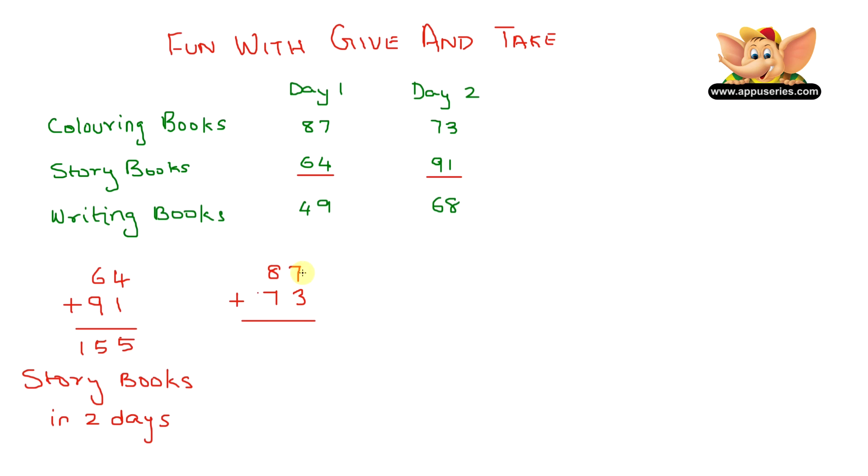That's 7 plus 3 equals 10. So we write 0 over here and carry over the 1 to the next column. So that's 1 plus 8 plus 7 equals 16. So he sold 160 coloring books in two days. So yes, now we know he did sell more coloring books than story books in two days.